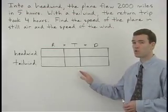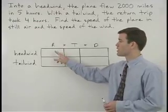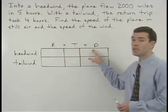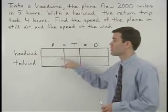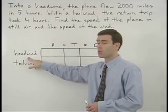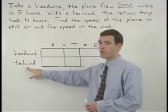Let's start things off by setting up a chart based on the formula rate times time equals distance for the two trips that our plane took, into a headwind and with a tailwind.